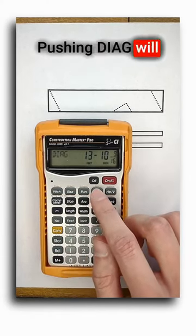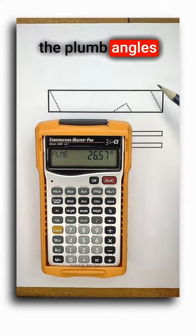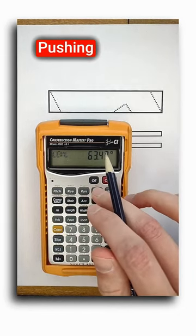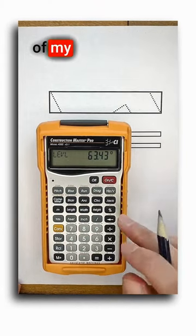Pushing diag will give me the length of any common rafters and pushing it again will give me the plumb angle for all of my plumb cuts in the rafter. Pushing the diag button one more time will give me the level cut for the seat cut of my bird's mouth.